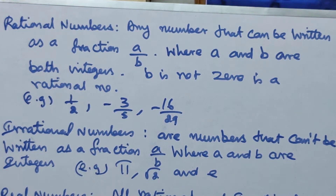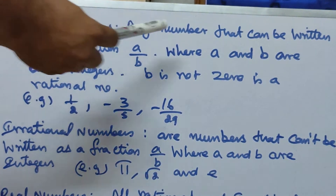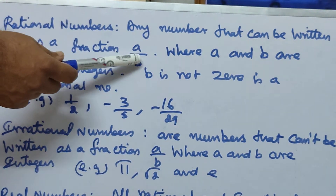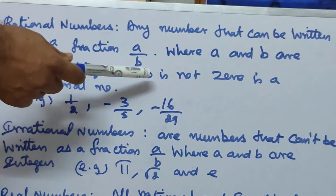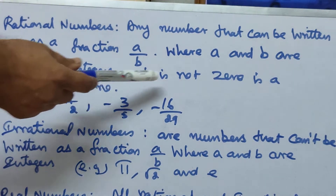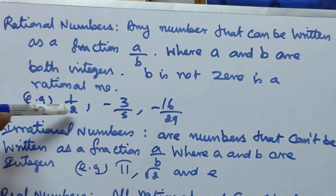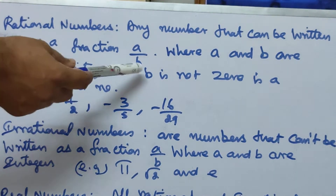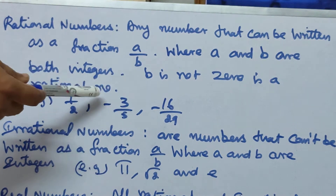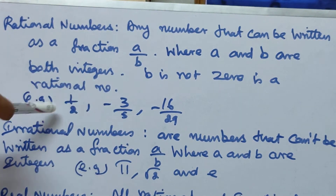Mathematics basis: rational numbers. Any number that can be written as a fraction a divided by b, where a and b are both integers and b is not 0, is a rational number. For example, 1/2.